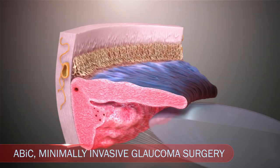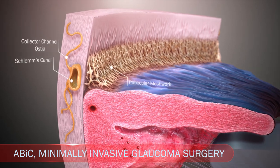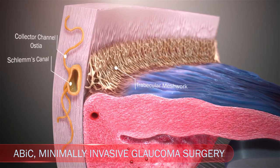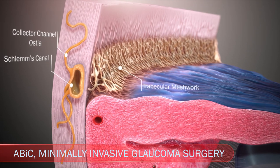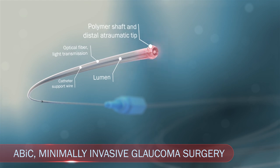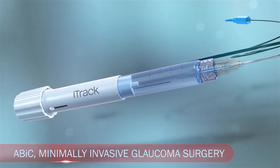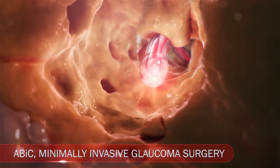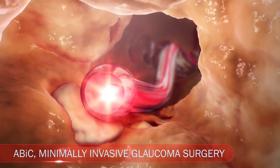A simple three-step procedure, ab interno canaloplasty acts to restore the eye's natural outflow system and does not require a permanent implant or device in your eye. Based on the same principles as angioplasty, ab interno canaloplasty uses breakthrough microcatheter technology to enlarge your eye's natural drainage system, improving outflow and lowering IOP.